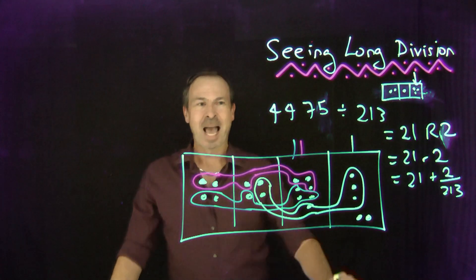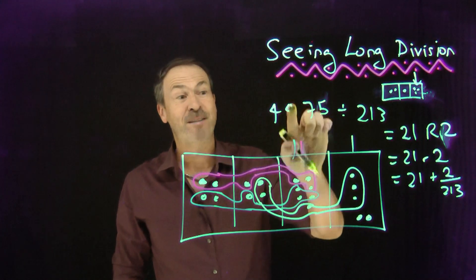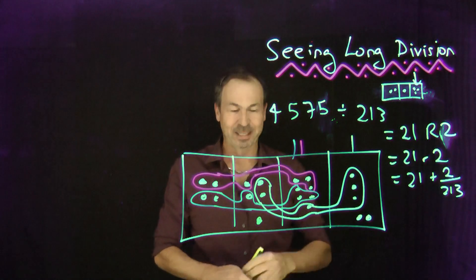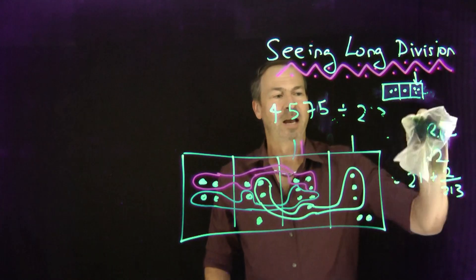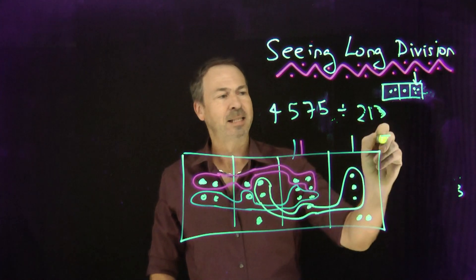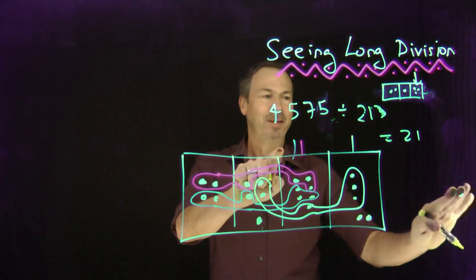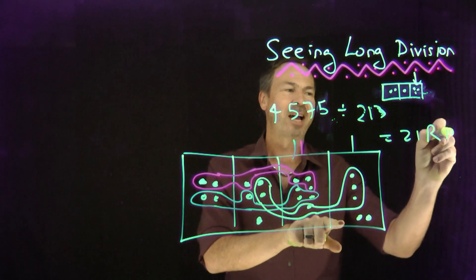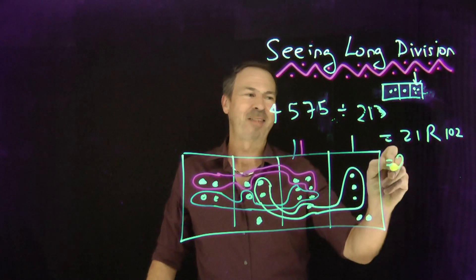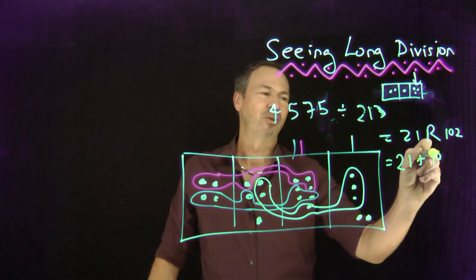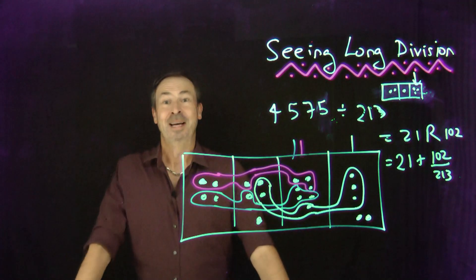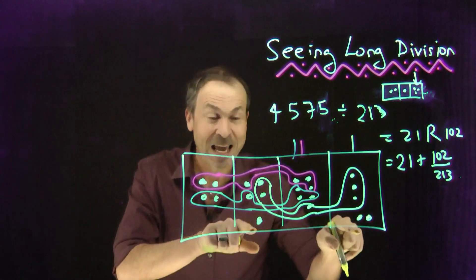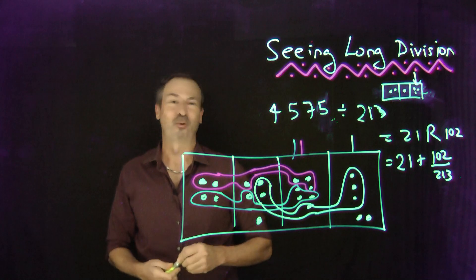If I made this 4,575 divided by 213, you'd say the answer is still 21 with a remainder — 1 dot, 0 dots, 2 dots — a remainder of 102. In math language: 21 plus 102 over 213, still waiting to be divided. So if there are remainders, you will literally see them — they'll be right there before your very eyes. Beautiful, stunning, grand.